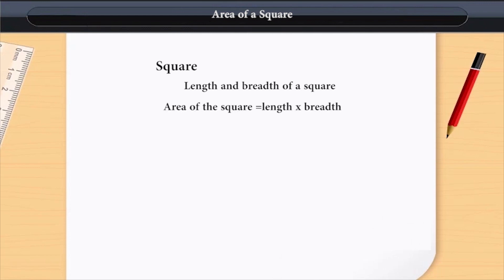Therefore, as in the case of a rectangle, the area of a square will also be the product of its length and breadth. This means length of the side multiplied by the length of the side, which will be equal to the square of the length of the side.